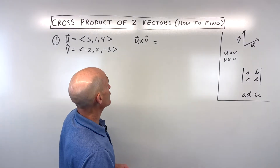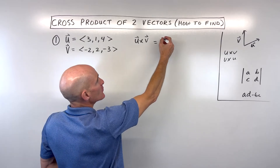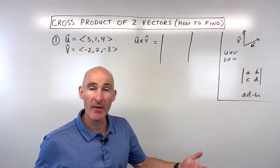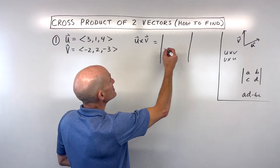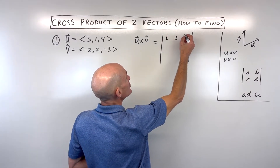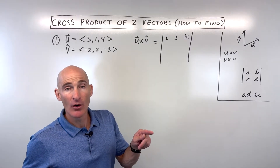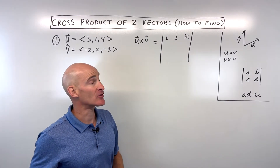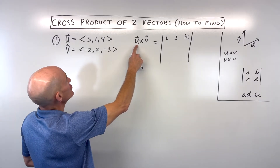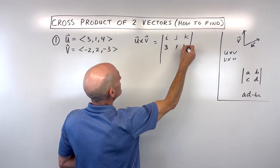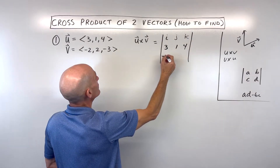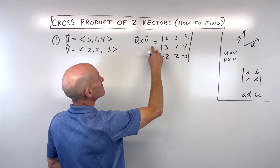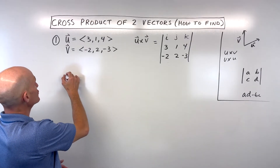Now the way that we find the cross product is set up very similar to when you take the determinant of a three-by-three matrix using the method of minors. We're going to start with the first row writing the standard unit vectors i, j, and k — remember i is a one unit vector in the x direction, j is a one unit vector in the y direction, k is a one unit vector in the z direction. Then you take vector u first, which in this case is (3, 1, 4), then vector v which is (-2, 2, -3). Make sure the order — u comes first, v comes second.